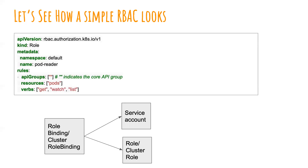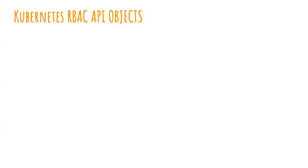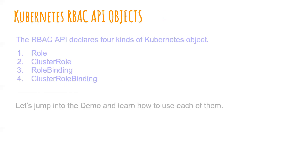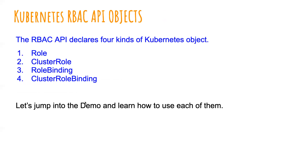Let's take a very simple example. Let's say a service account just needs permission to get, list, and watch pods in a specific namespace — probably the default namespace. This is the role that we would create. And once you create this role, as shown in the image, you would then create a role binding which binds the service account to the role. I'll show you how this happens using a live example, so things will be much clearer. Apart from that, we also have a couple of other resources: a cluster role and a cluster role binding. We'll also try to understand what those do and how they differ from a simple role and role binding.